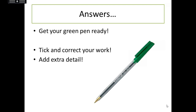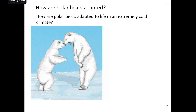Grab yourself a different pen, preferably green if you've got one, and we're going to add extra detail if you can, but first make sure we've got them all right. Let's start with the polar bear. They live in extremely cold climates, which are normally quite icy or snowy — normally a white kind of environment around them. They also spend quite a lot of time in the water, getting to different areas of the ice shelf so they can find more food.